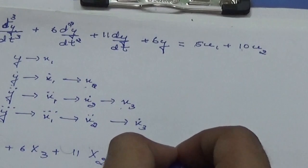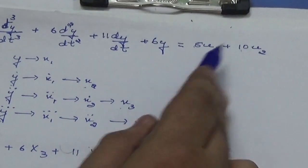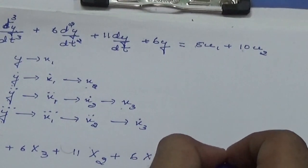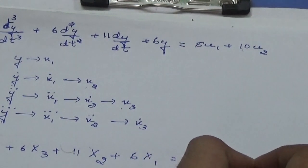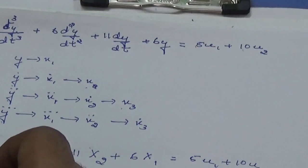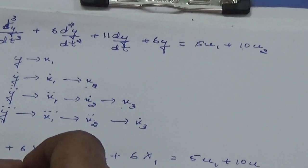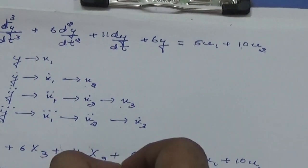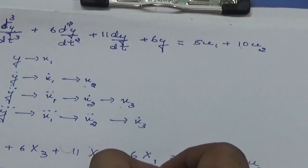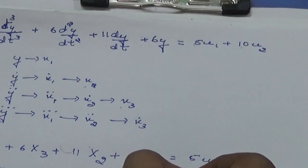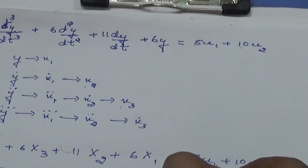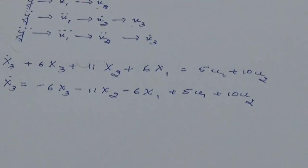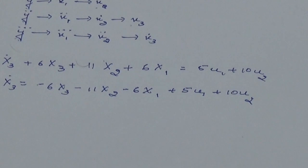Which remains as it is. Now the x₃ dot expression is x₃ dot = -6x₃ - 11x₂ - 6x₁ + 5u₁ + 10u₂.